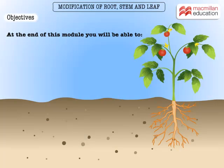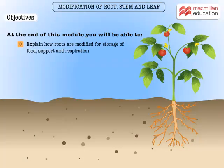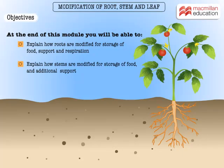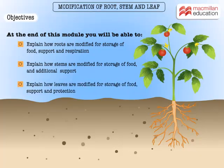At the end of this module you will be able to: explain how roots are modified for storage of food, support, and respiration; explain how stems are modified for storage of food and additional support; and explain how leaves are modified for storage of food, support, and protection.